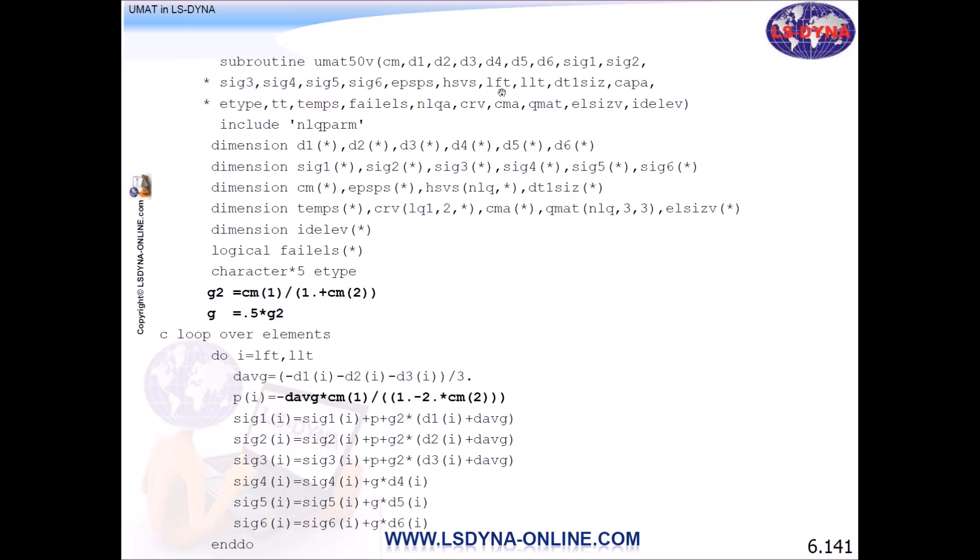And then we have LFT and LLT. So I told you for PC, the length of the vector array is 136. So LFT is 1, LLT is 136. What LS-DYNA does is it sends 136 elements for each integration point all into one shot, basically, to the subroutine. And you need to do everything that you have to do on these 136 elements in a do loop. DT1, that's delta T, kappa sheet correction factor.